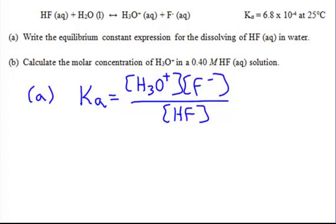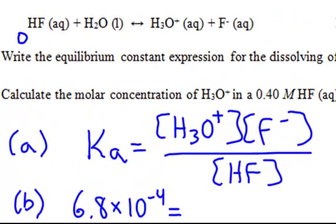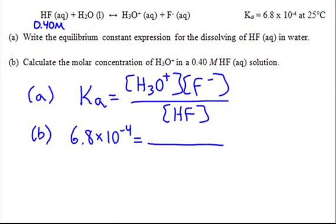It already gives you a few points, and now we're on to Part B, where we're going to do some calculations. Ka is 6.8 times 10 to the negative 4th. They've given us 0.40 molar of HF initially. He starts to dissociate only a tiny, tiny bit, so the HF concentration becomes 0.40 minus X, going down in value so that the products can go up.